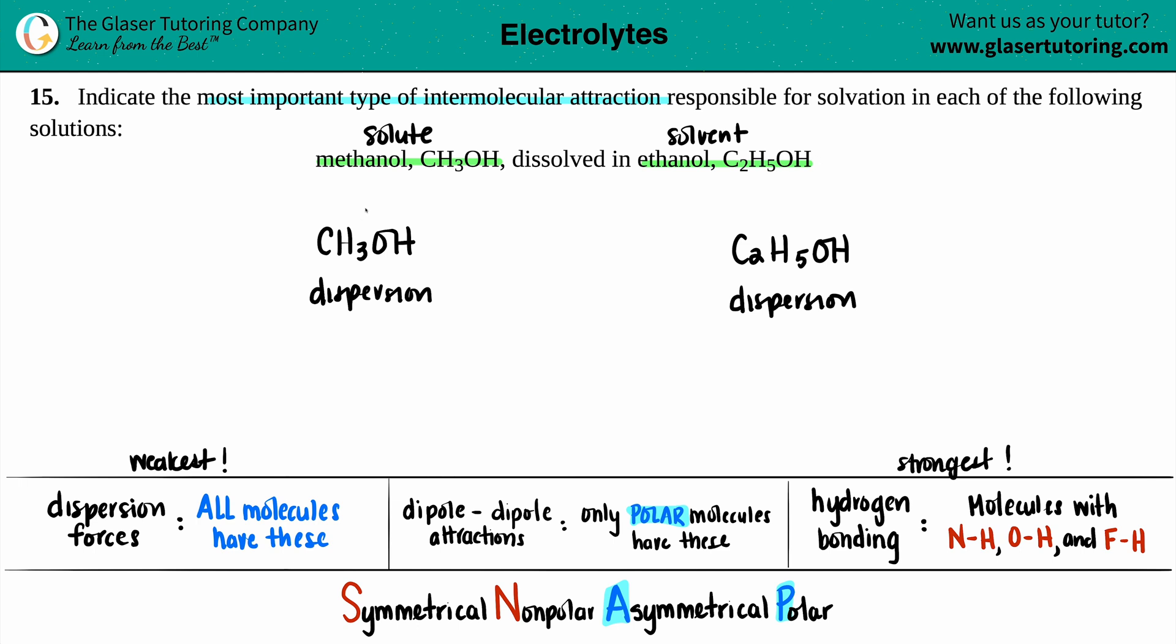If we just try to cut it down the middle here, this is clearly not symmetrical. You have an oxygen and a hydrogen on one side, you got carbons and hydrogens on another side. There's no oxygens on the left side. So this is clearly asymmetrical. This is polar. And if you do have a polar molecule, you will have dipole-dipole attractions.